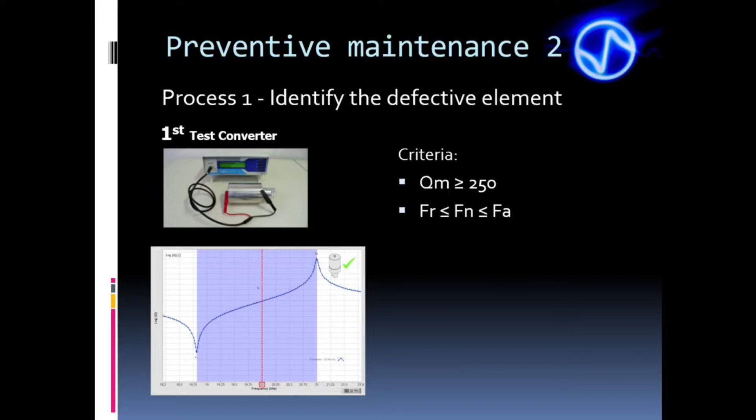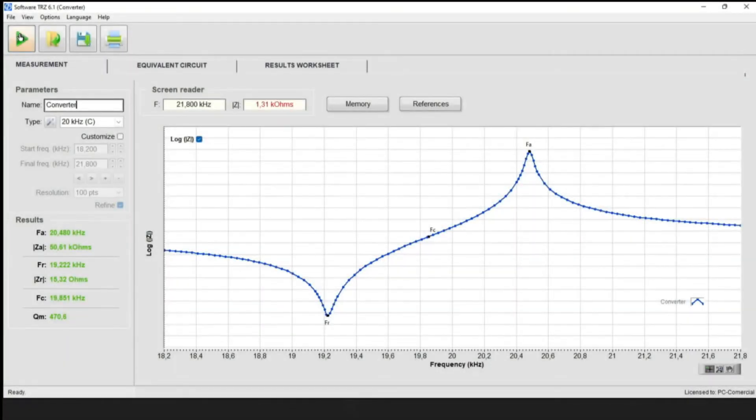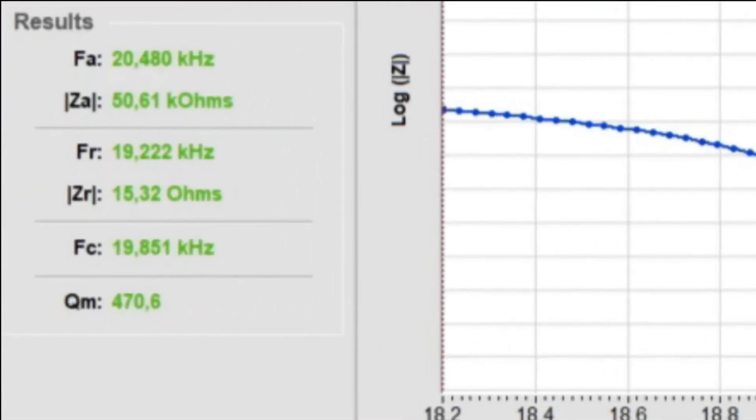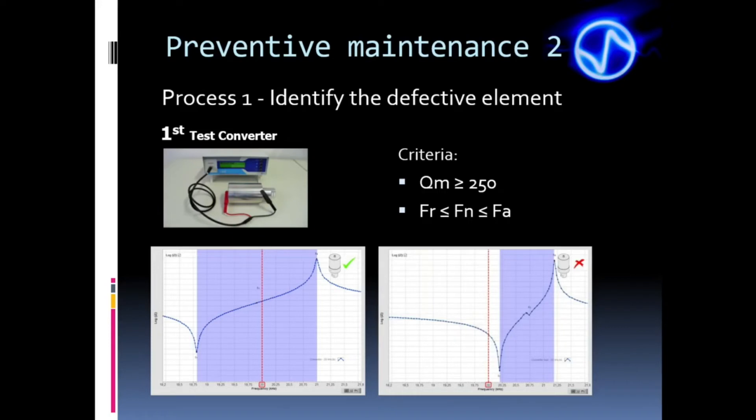For example, the converter analyzed with the TRZ in this figure operates on a 20 kHz machine. Note from the measurement that the 20 kHz frequency value is within the range between FR and FA highlighted in blue. So this converter has passed the frequency criterion. If it has a QM greater than 250, it has the minimal requirements for a reasonable performance. This other converter does not meet the criteria, as the range between its FR and its FA does not contain 20 kHz.